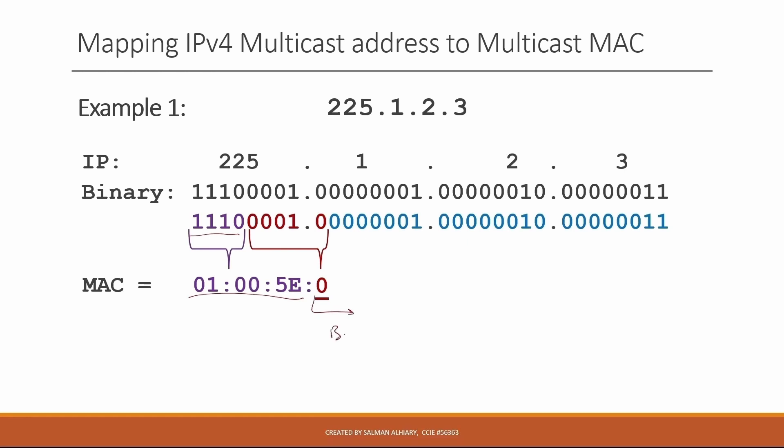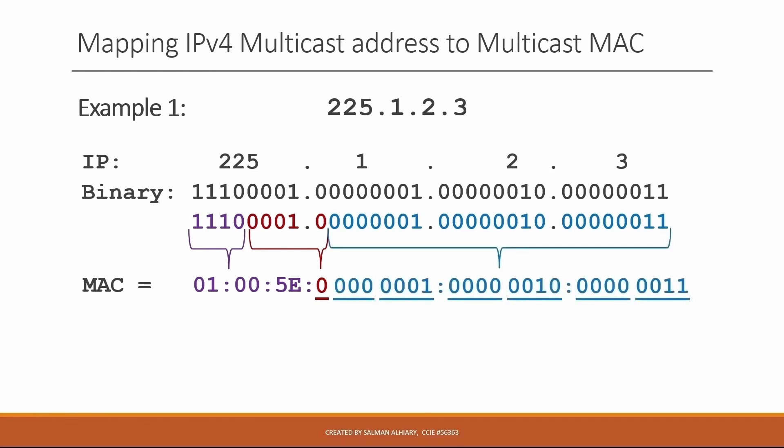Step three: replace the next five bits with binary zero. So here in hexadecimal, the next five bits will be zero. We are not mapping the first nine bits of the IP address to anything in the MAC address — it is always fixed. Every MAC address for a given IPv4 multicast address will start with 01:00:5E, and the first bit of the second octet will be zero. Step four: copy the last 23 bits of the binary IP address into the last 23 bits of the MAC address.